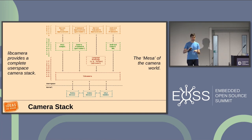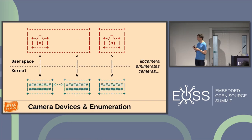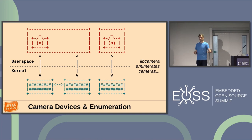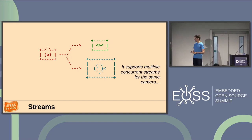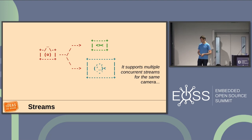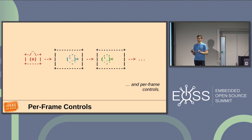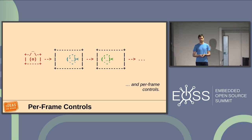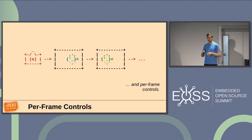So what is libcamera? If you're familiar with the graphics world, you could describe it as the Mesa of the camera world. It's a complete user space camera stack. You've done your homework on the kernel side — libcamera does not touch the kernel, it assumes you have kernel drivers. But it provides a complete stack in user space: enumeration of cameras, automatically figuring out what's in your system, exposing that to applications, capturing multiple streams at the same time in different resolutions and formats, and controlling all parameters of the camera for every single frame.